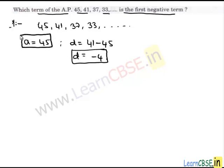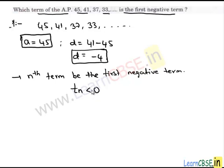Let us assume the nth term is the first negative term. That means the nth term is less than zero. According to the general term of an AP, if a is the first term and d is the common difference, then the nth term is a plus (n minus 1) times d. In this situation, it is less than zero.